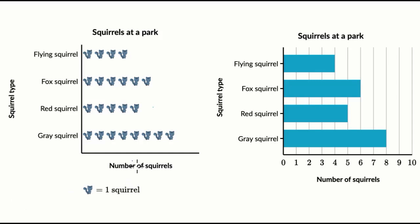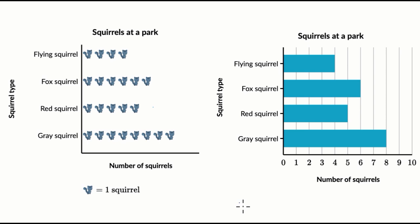What you see here are two different ways of looking at the same information. For example, if I were to ask you — and you could look at either this graph on the left or this graph on the right — what type of squirrel do they find the most of at the park? What would your answer be? The way that you would try to answer that, let's say you were to look at this graph on the left, which is a picture graph.